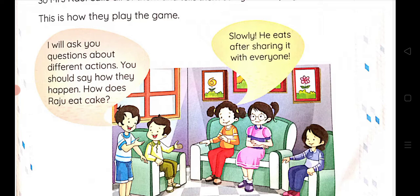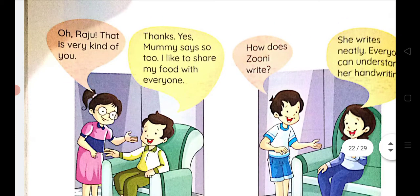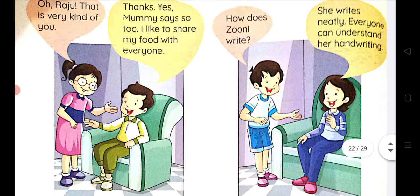The first question is: how does Raju eat cake? He eats slowly and shares it with everyone. Someone says, 'Raju, that is very kind of you.' Raju says thanks. Raju says, 'I like to share my food with everyone.'